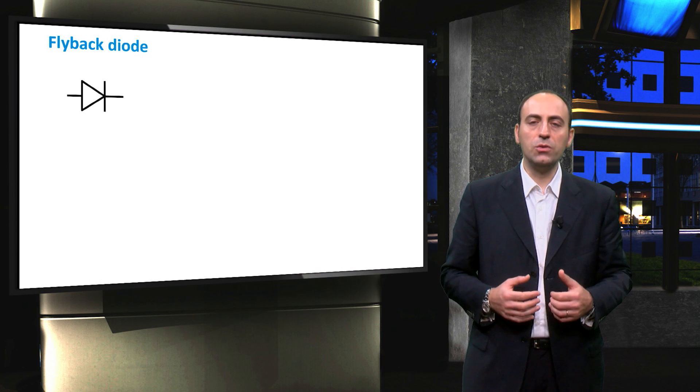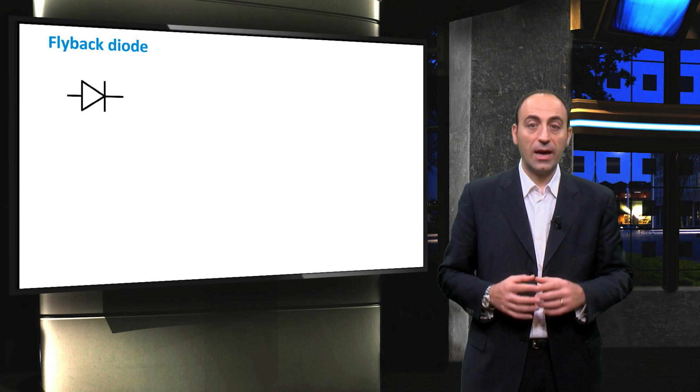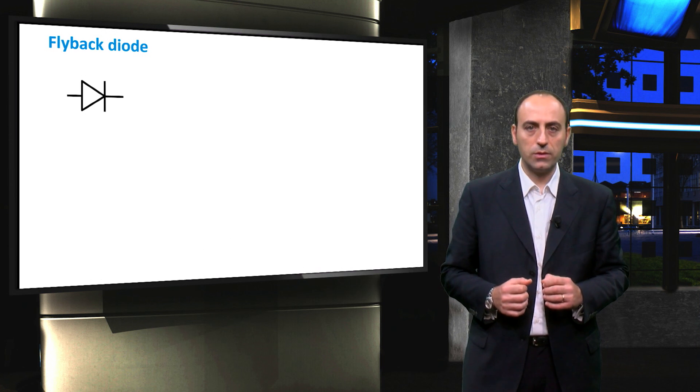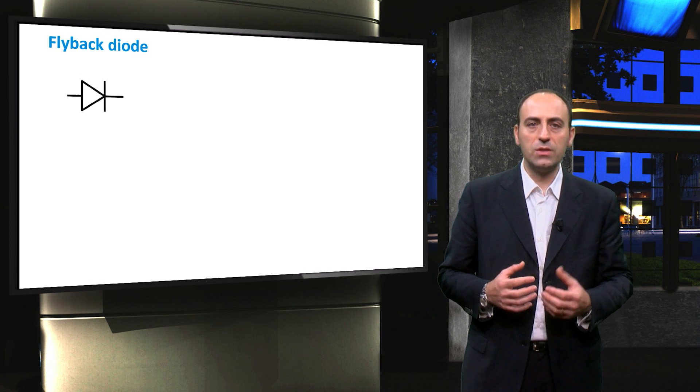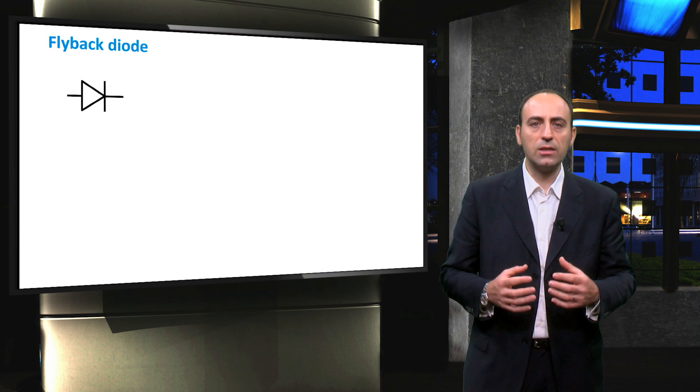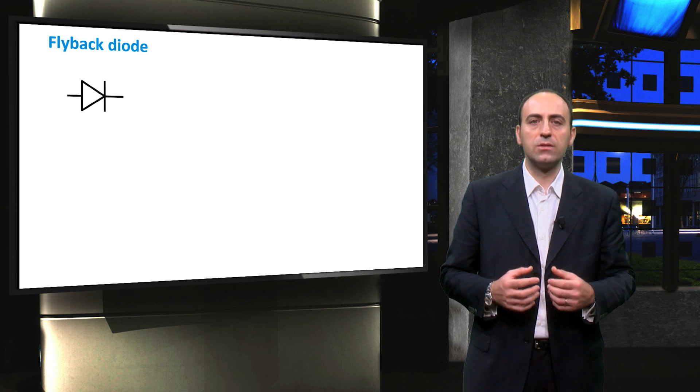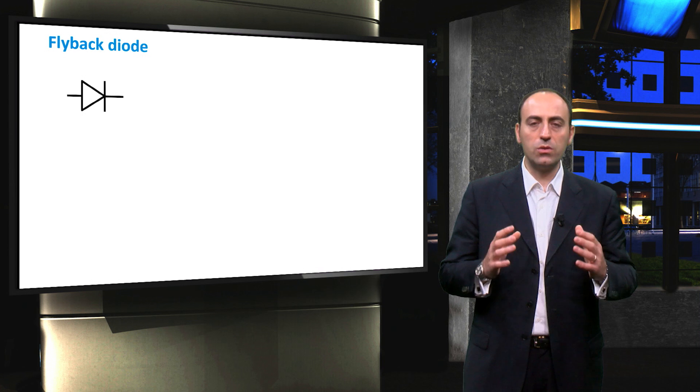The second component that we introduced is the flyback diode, extremely important for the converters. It is a diode used to eliminate flyback, which is the sudden voltage spike seen across an inductive load happening when its supply current is suddenly reduced or interrupted.